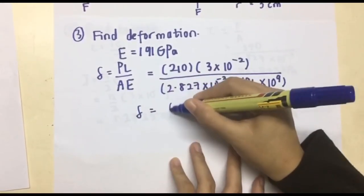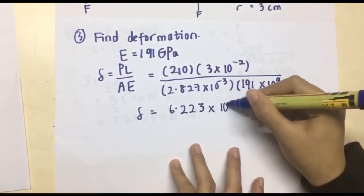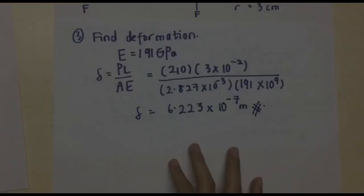So, when we substitute all the information, we get 6.223 times 10 to the power of negative 7 M.